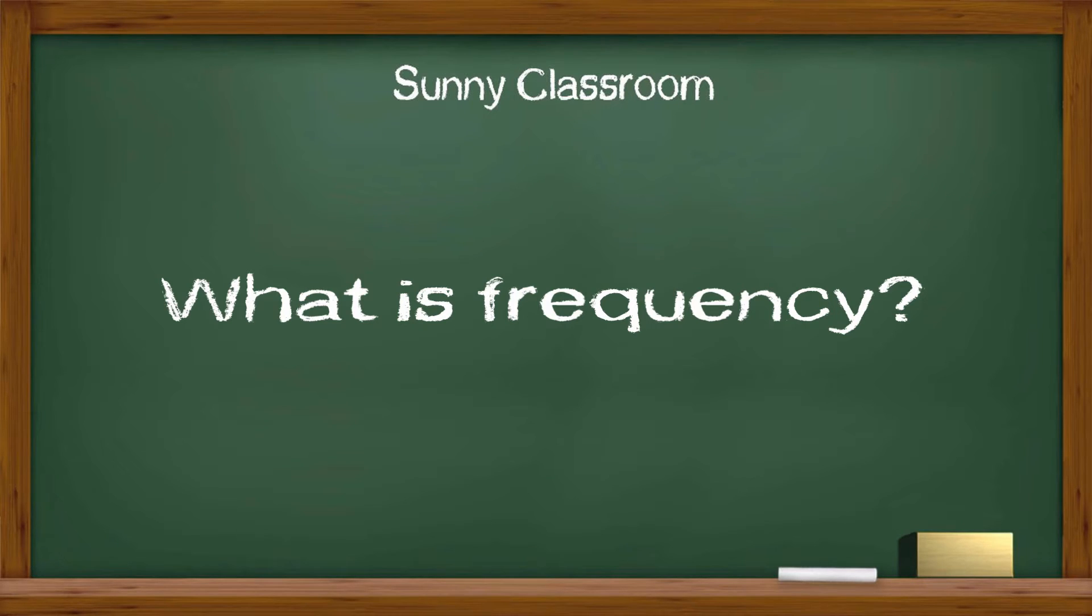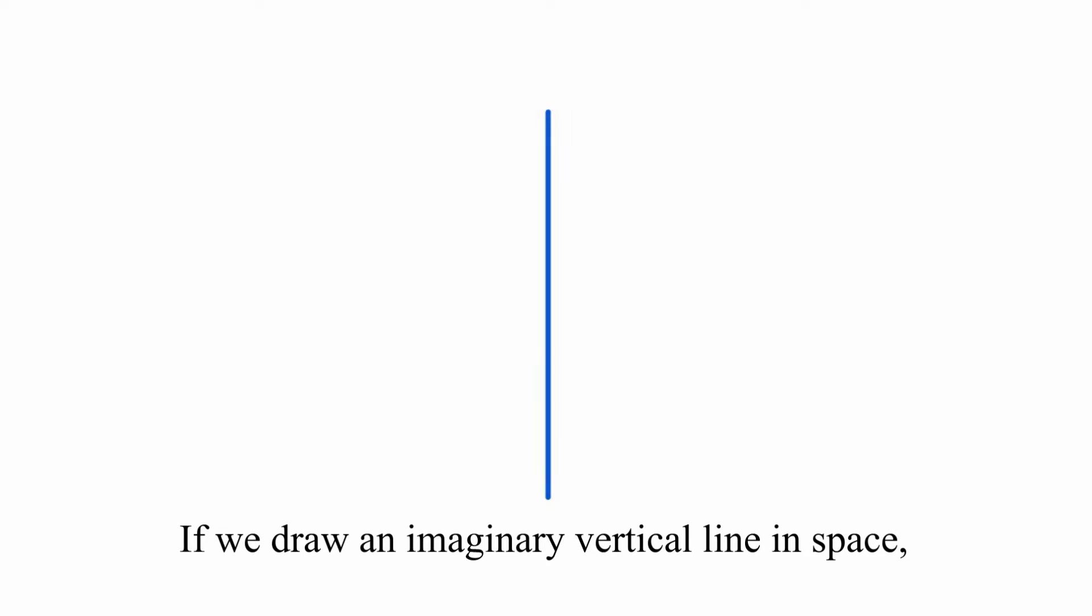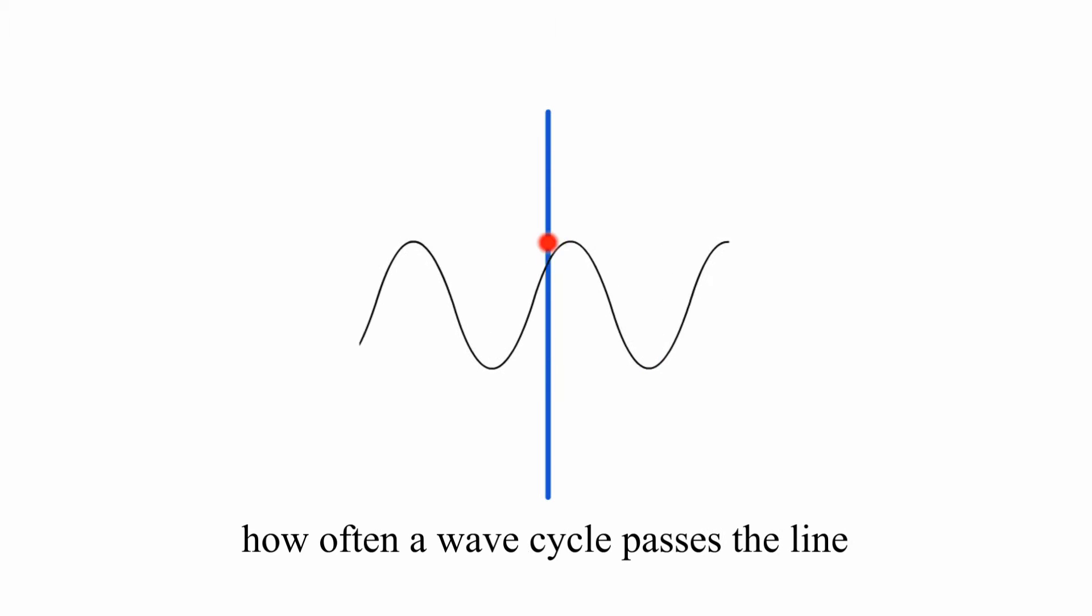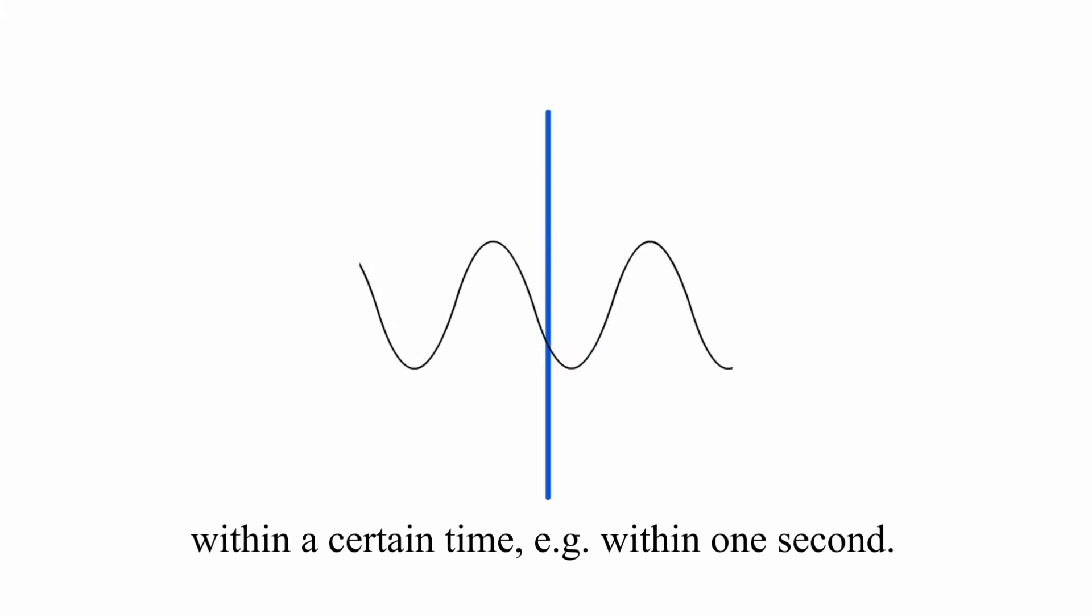Then what's the frequency? If we draw an imaginary vertical line in space, the frequency of a wave is how often a wave cycle passes the line within a certain time, for example within one second.